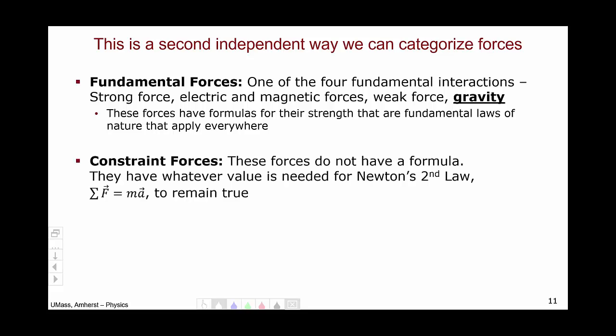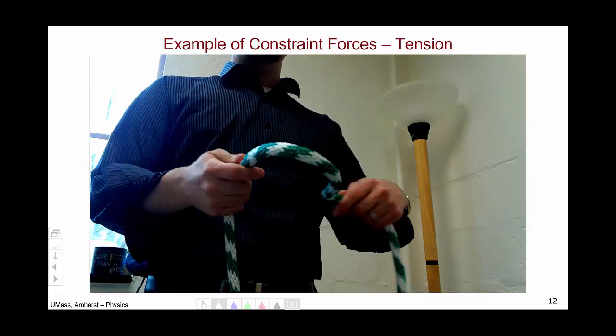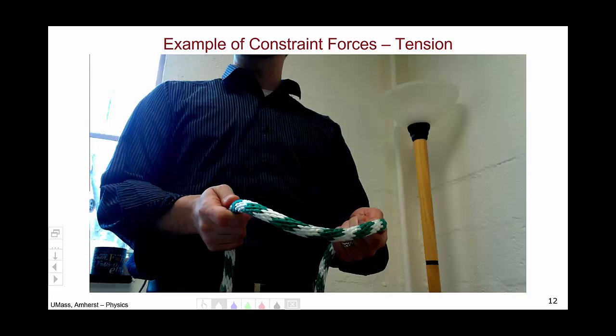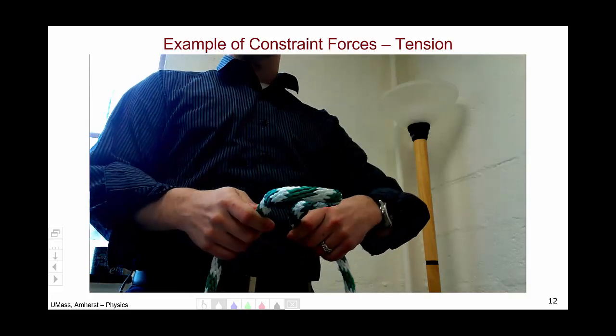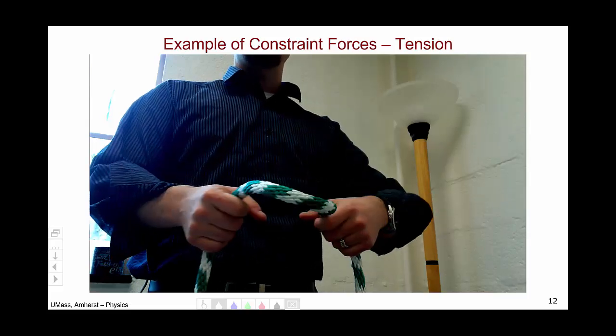In contrast, constraint forces do not have a formula. They take on whatever value is necessary for Newton's second law, F equals ma, to remain true. Here, I'm going to use the tension in this rope as a model for a constraint force. When the rope is loose and slack, there's essentially no tension in the rope.